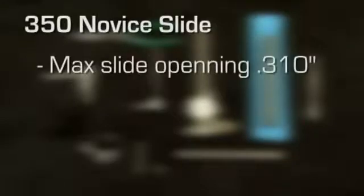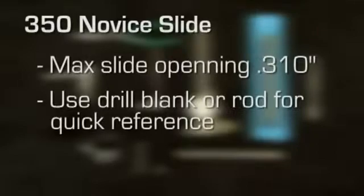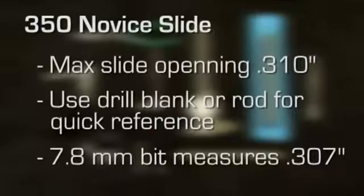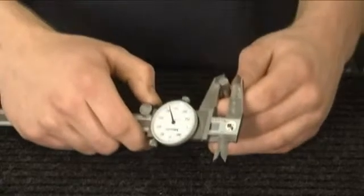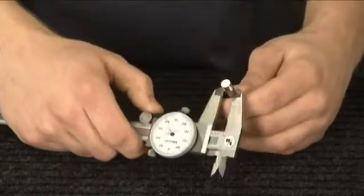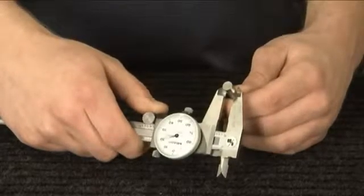Let's look at the 350 Novice slide. The rule set has a maximum slide opening of 310 thousandths. This height was chosen so a drill blank or rod could be used for a quick reference. In this case, a 7.8 millimeter bit measures 307 thousandths. We always recommend a quick validation of the bit size using calipers.